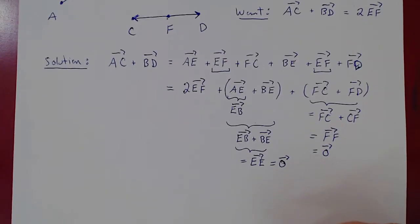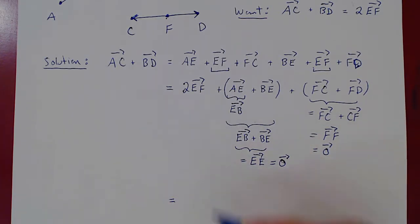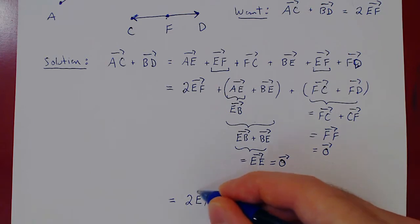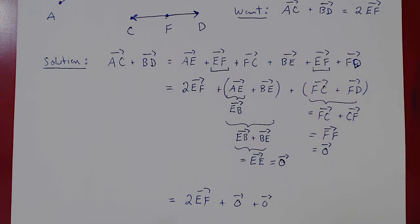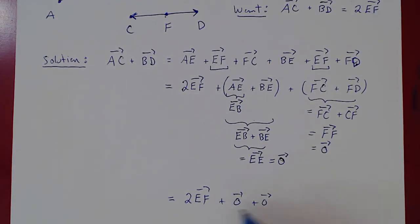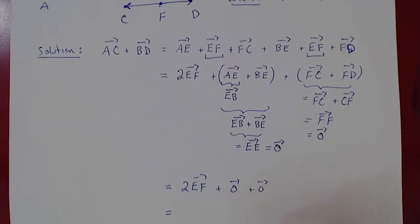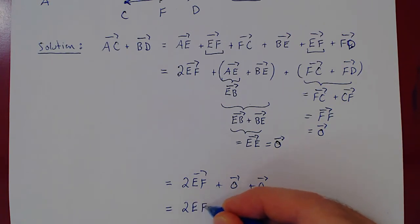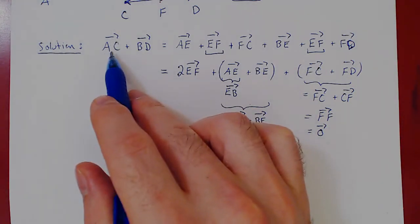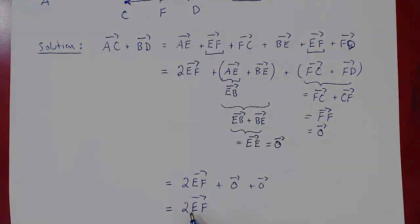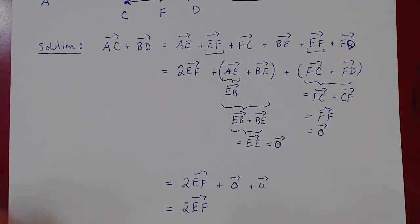So in the end, what are we left with? We're left with 2EF, plus the zero vector, plus the zero vector. But if you add the zero vector to anything, nothing happens. The zero vector is the vector of zero length. So we're left with quite simply, twice a vector EF, as desired. So indeed, AC plus BD is equal to twice of EF. And we're done.